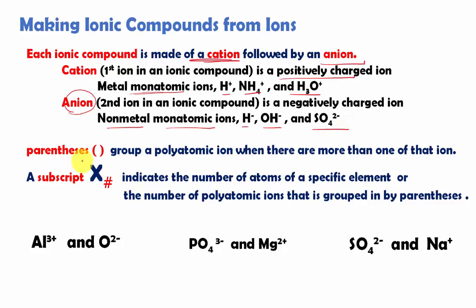We use parentheses to group polyatomic ions when there are more than one. Because in this case, we are going to make ionic compounds from our given ions. That's the tricky part. You are making your own chemicals based on your understanding of ions. Then we have subscript. Subscript being the number below the element symbols, and it indicates the number of atoms of specific elements or the number of polyatomic ions that is grouped by parentheses.